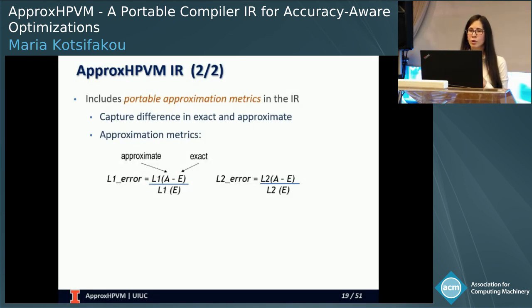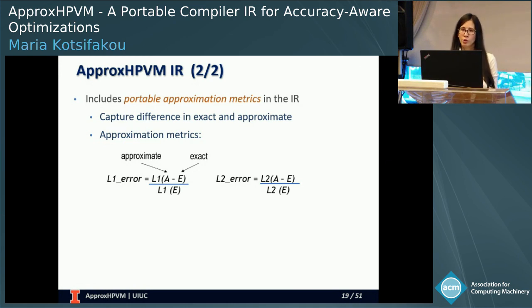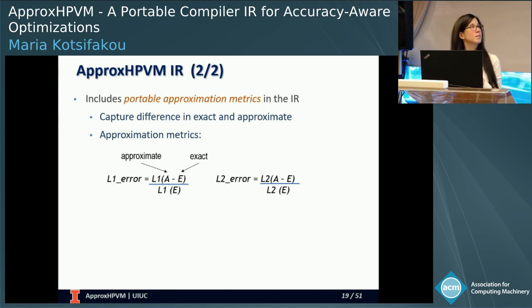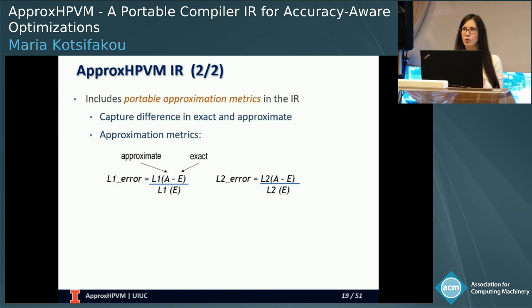We use two different error metrics: L1 and L2 error. For L1 error, we define it as the L1 norm of the difference between the approximate and exact tensor, normalized to the L1 norm of the exact tensor. Similarly, we define the L2 error using L2 norms instead.